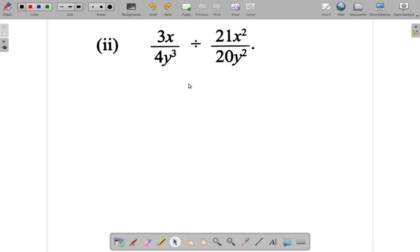What you have here is 3x over 4y cubed divided by 21x squared over 20y squared.